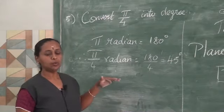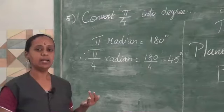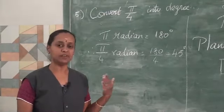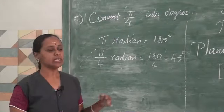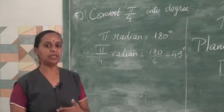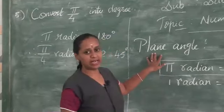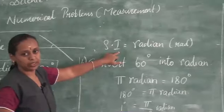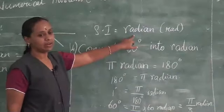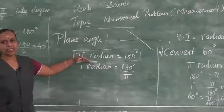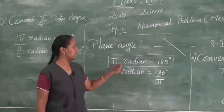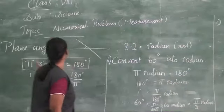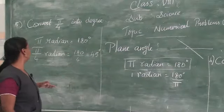We studied the physical quantity electric current and the conversion of temperature scales — Kelvin to Celsius and Celsius to Kelvin — using the formula. We also studied electric current I = Q/T in amperes, and the derived quantity plane angle, whose SI unit is radian. We learned to convert radians to degrees and degrees to radians using π radian = 180 degrees. We have completed 5 sums.